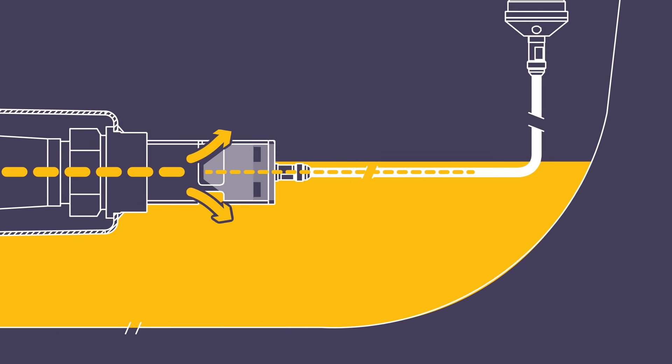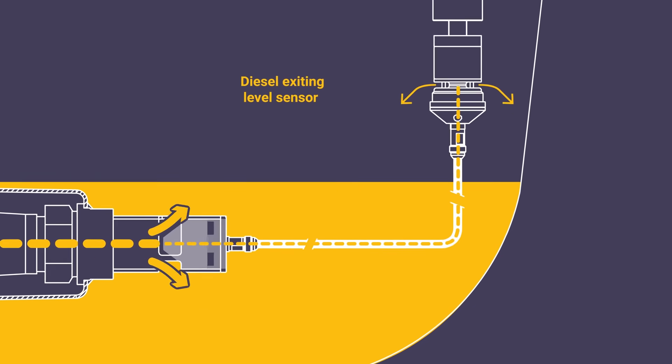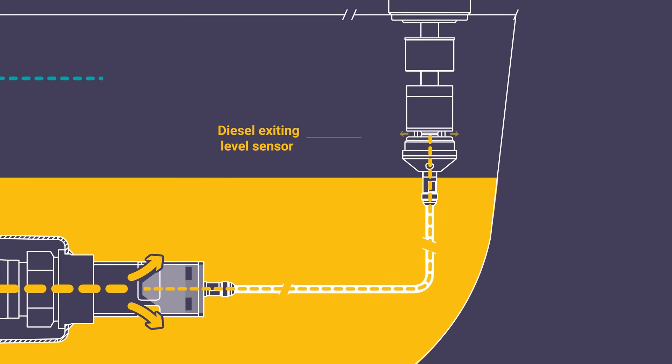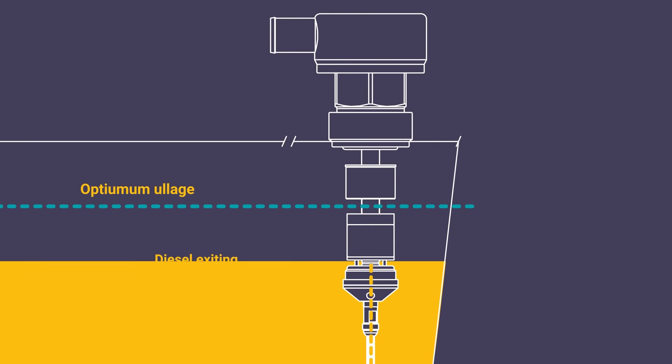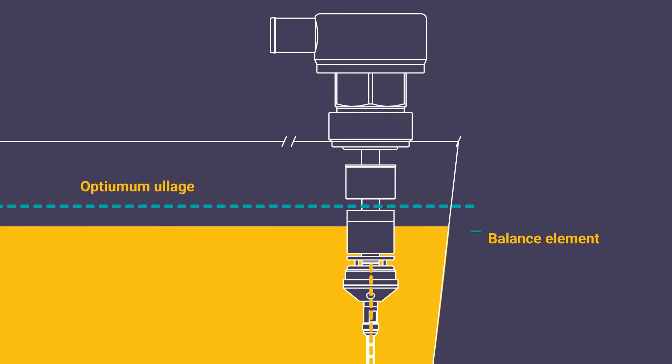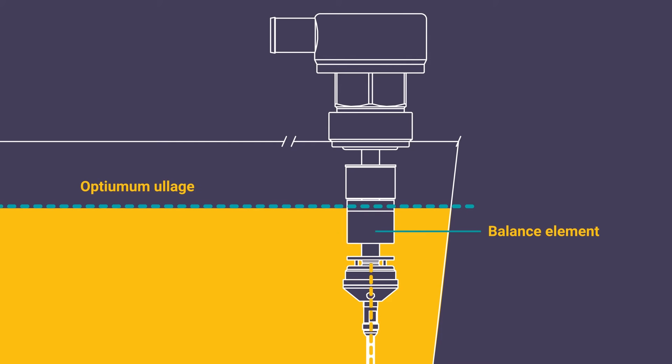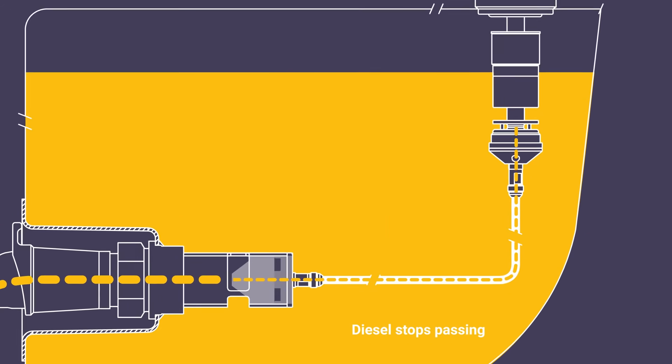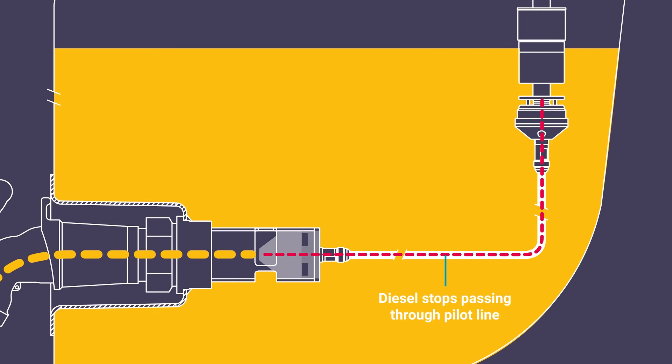A trickle of diesel travels from the flow control valve through the pilot line and out of the bottom of the level sensor. When diesel within the tank reaches the optimum ullage, it interacts with a balanced element in the flow control valve which stops the trickle of diesel passing through the pilot line.